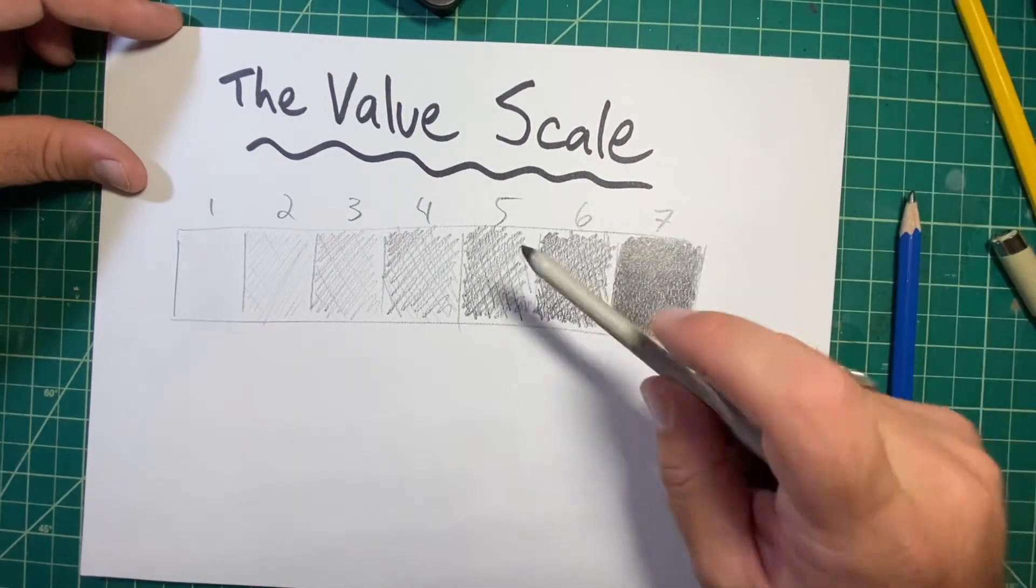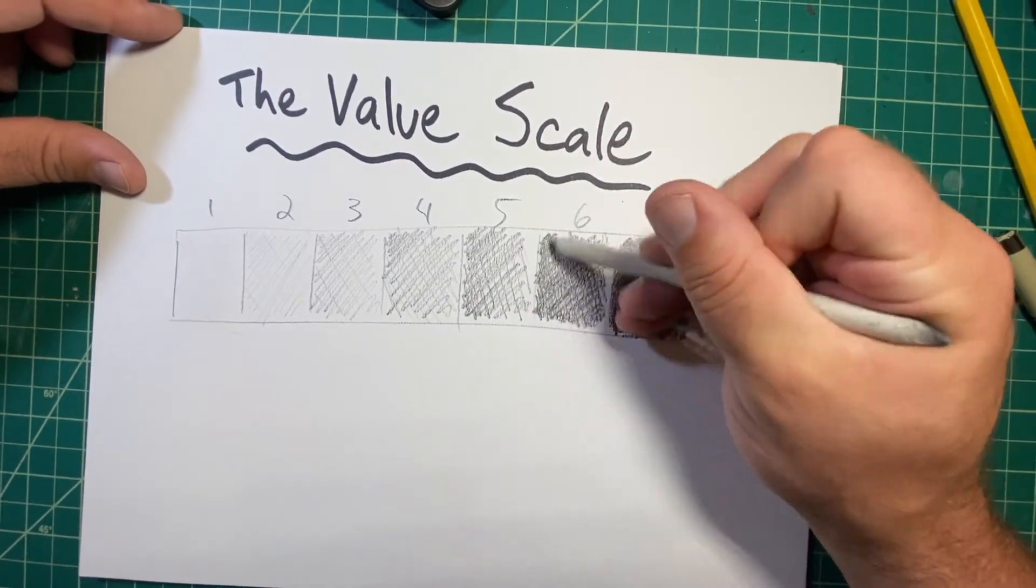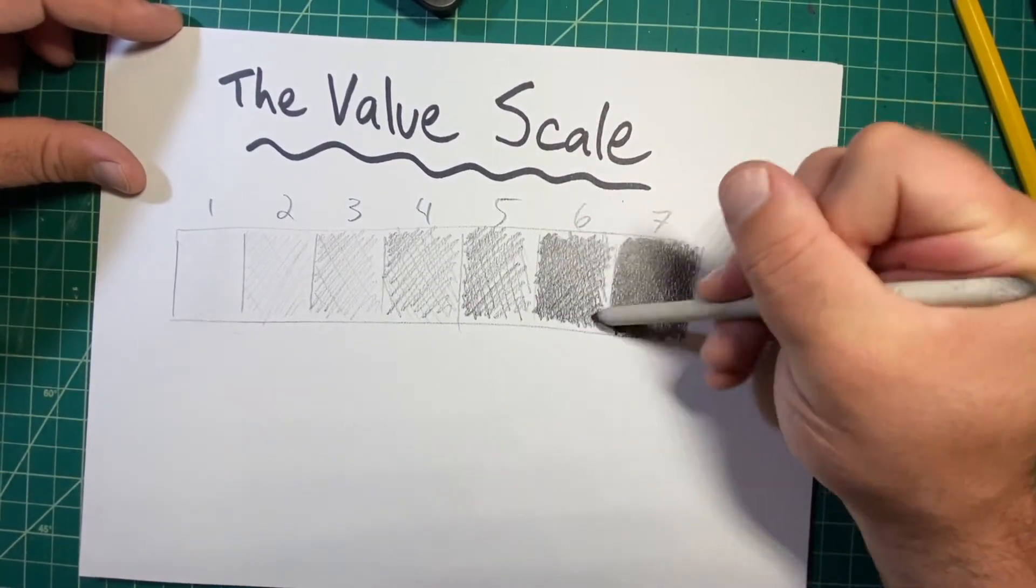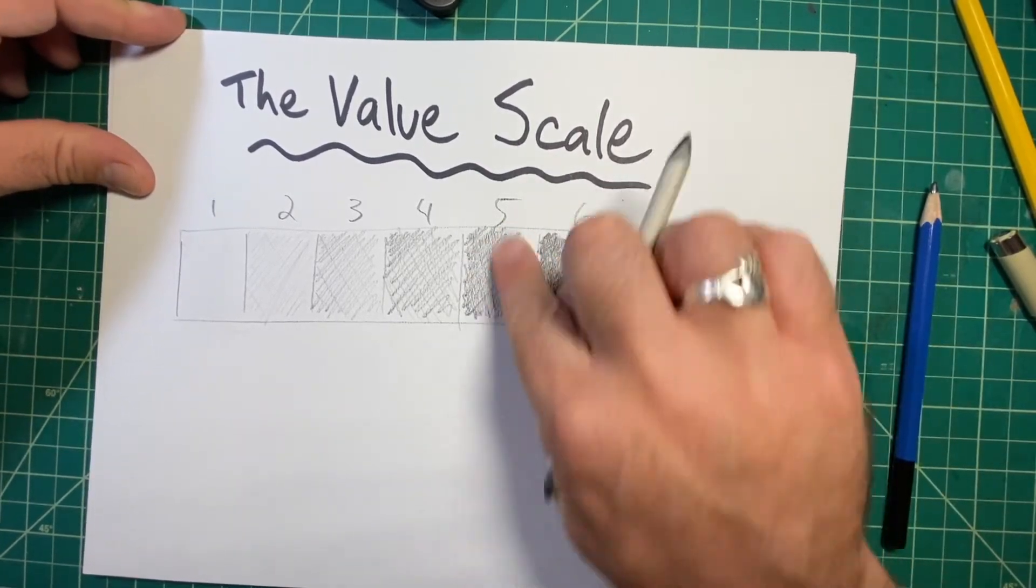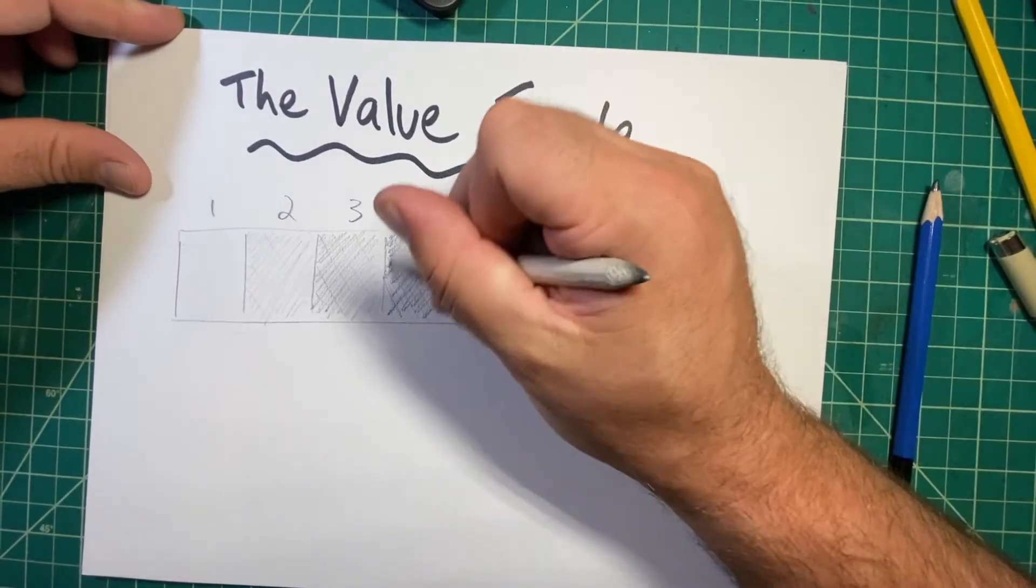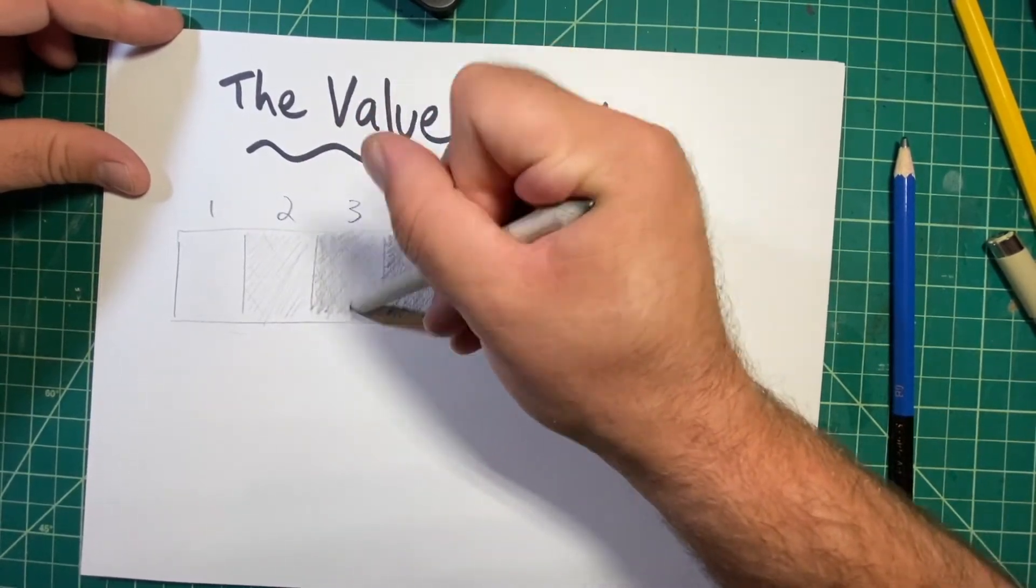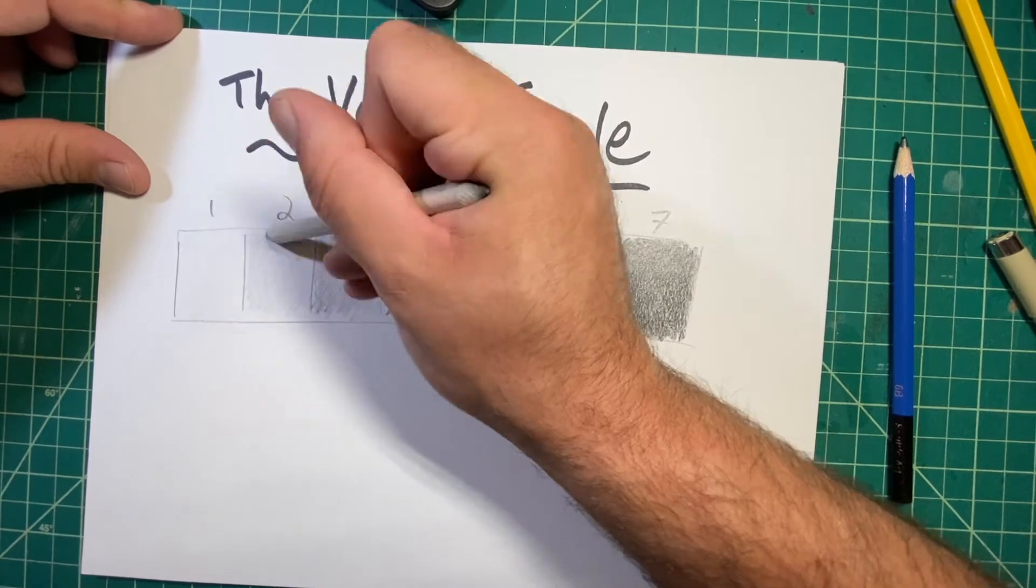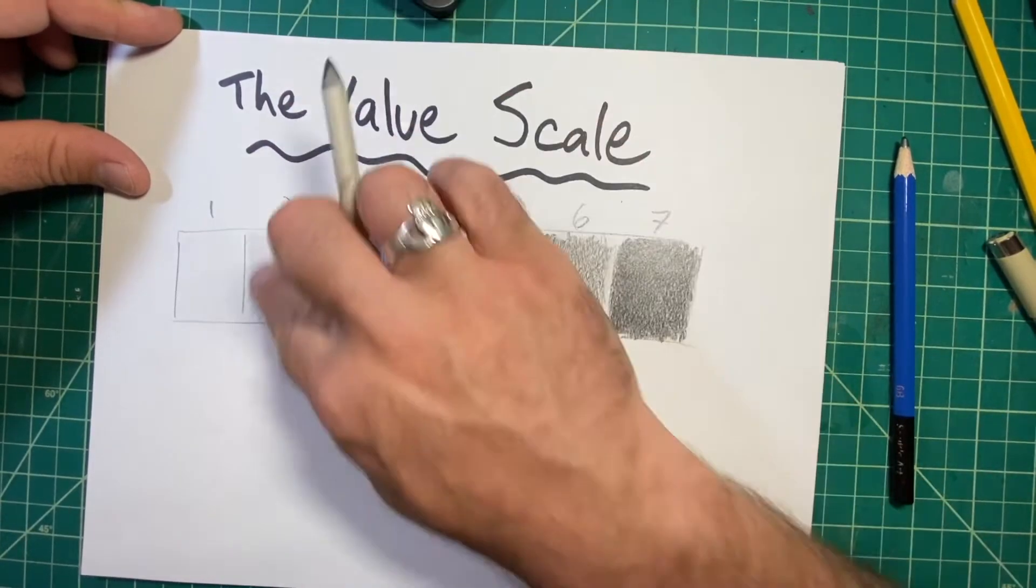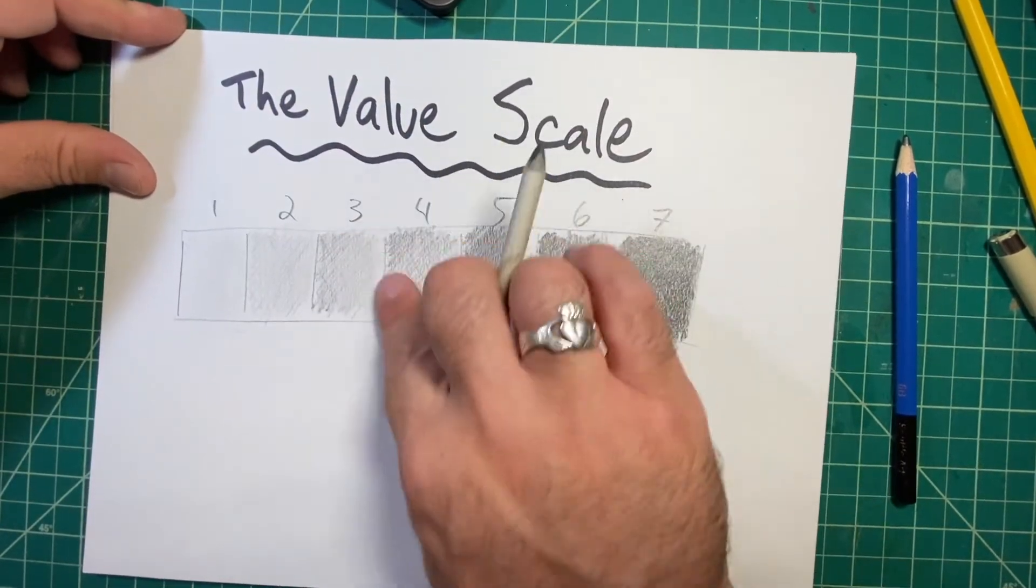And there we have it. Now, using my blending stick or my thumb or my finger, I'm just going to go over it one more time. I'm going to use either or, sort of see how they blend together. And we'll be using this reference sheet in some of our drawings later on.